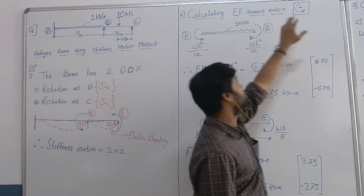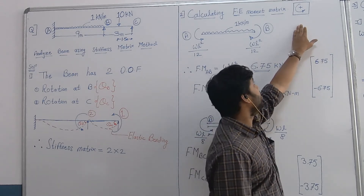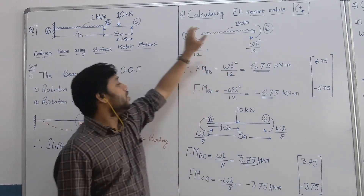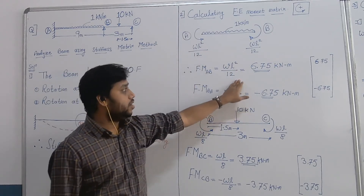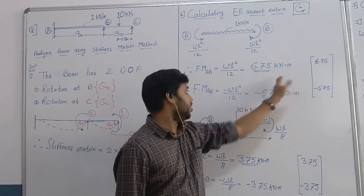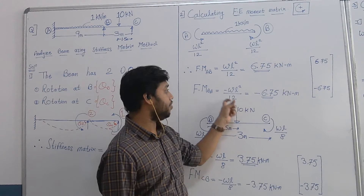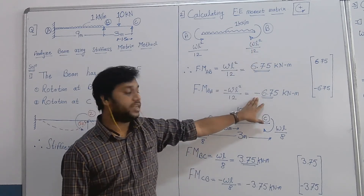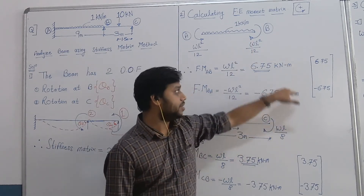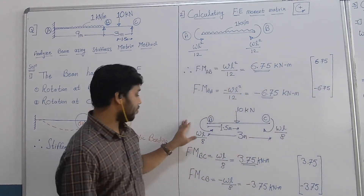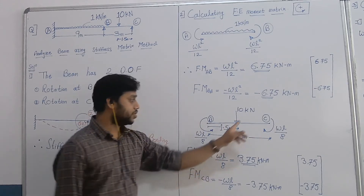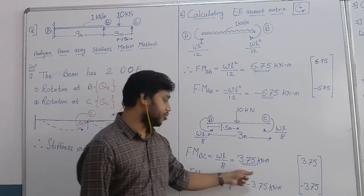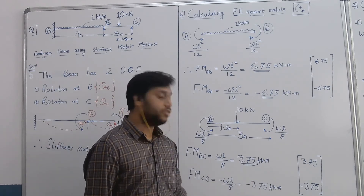While doing so, we will assume that anti-clockwise moments are positive. For span AB loaded with 1 kilonewton per meter UDL, the fixed end moment at AB is WL²/12, which turns out to be 6.75 kNm. Similarly, FMBA is −WL²/12, that is −6.75 kNm, because clockwise is negative. For member BC loaded with a 10 kilonewton point load at midpoint, the fixed end moment is WL/8, giving FMBC = 3.75 kNm and FMCB = −3.75 kNm.